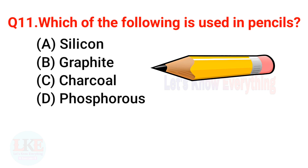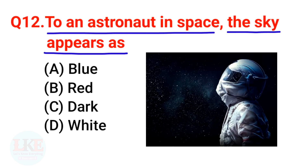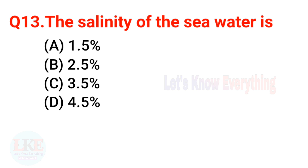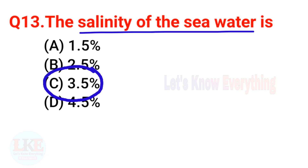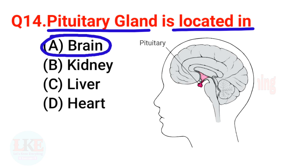Question 11: Which of the following is used in pencils? The right answer is option B — graphite. Question 12: To an astronaut in space, the sky appears dark. Question 13: The salinity of sea water is 3.5%. Question 14: The pituitary gland is located in the brain.